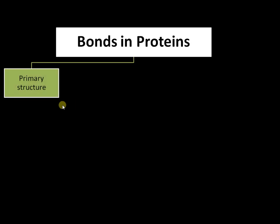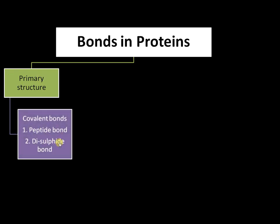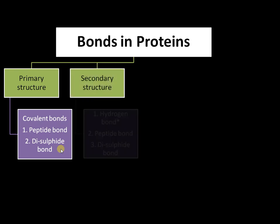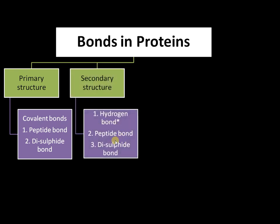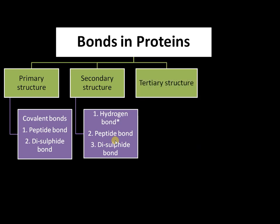Now moving into the bonds present in these structures. In the primary structure, the basic bond is the peptide bond between the amino acids, and there is also a disulfide bond between cysteine residues — some consider this a bond involved in tertiary structure. In secondary structure, the major bond is the hydrogen bond, apart from the peptide bond and disulfide bond. In the tertiary structure,